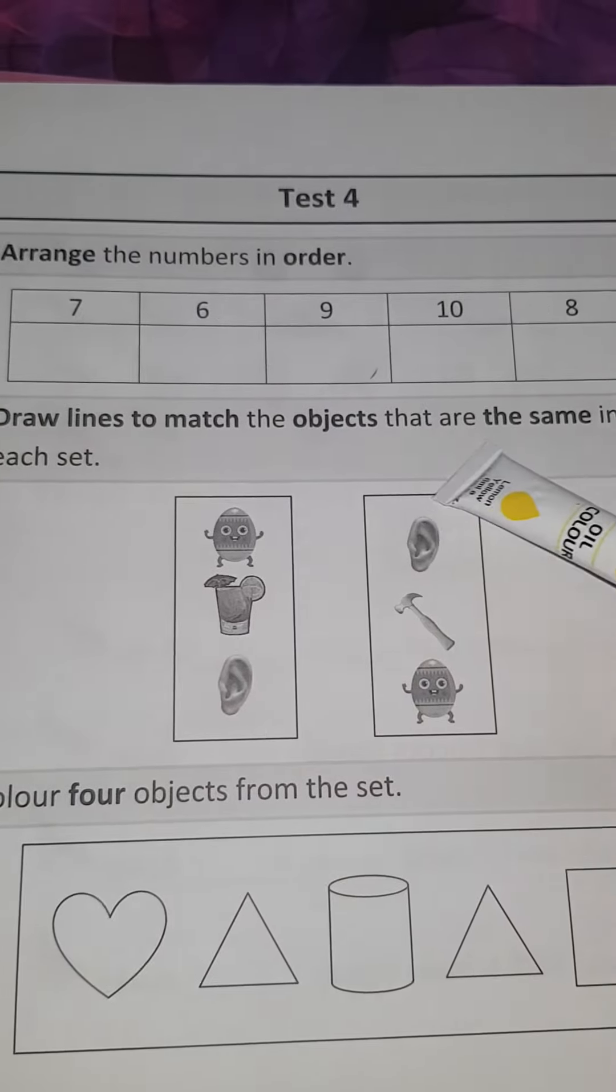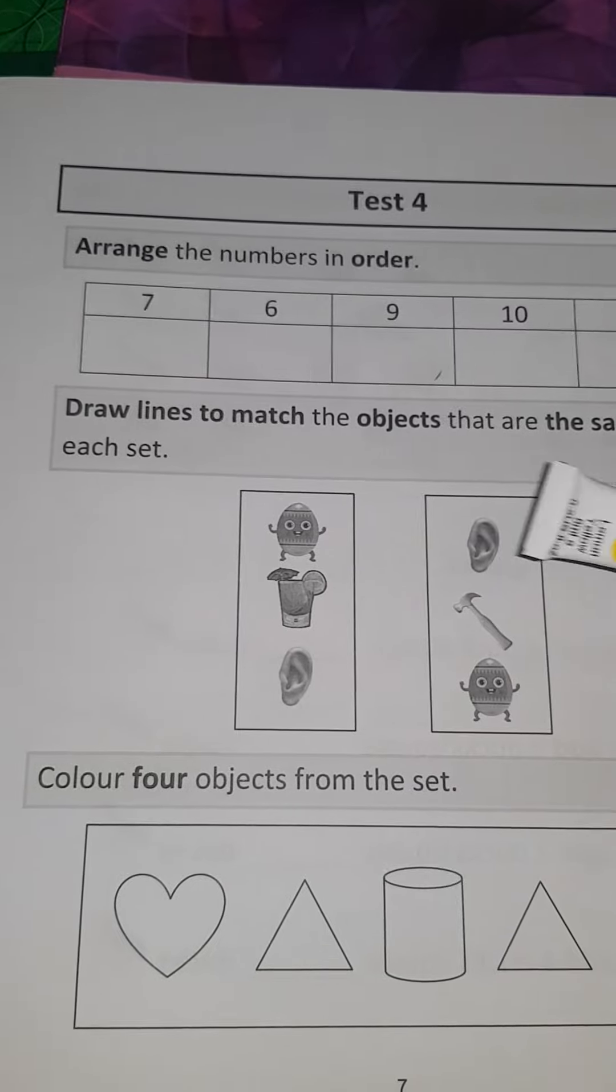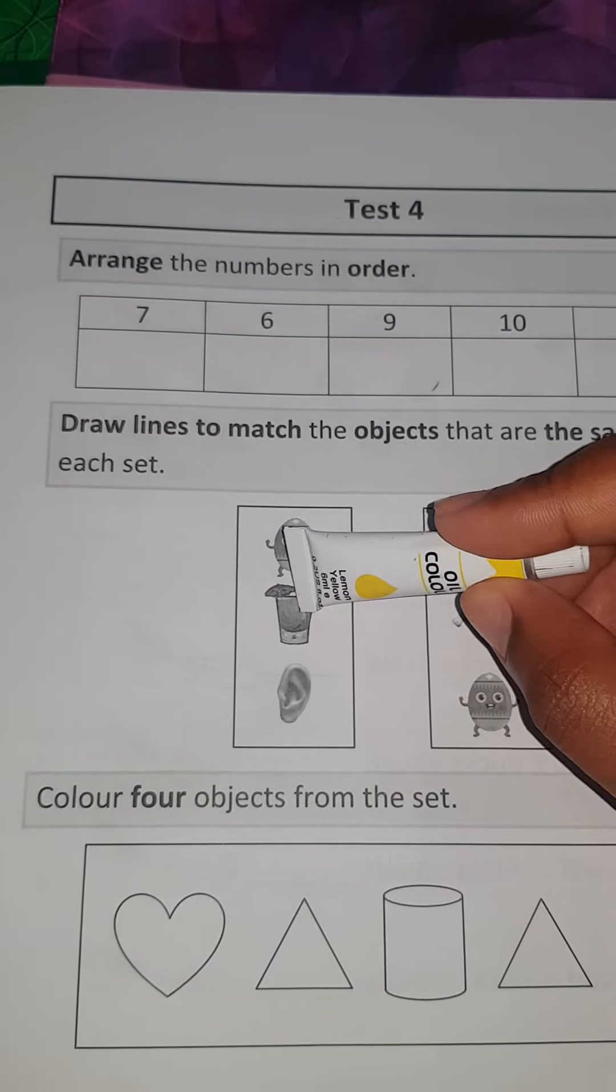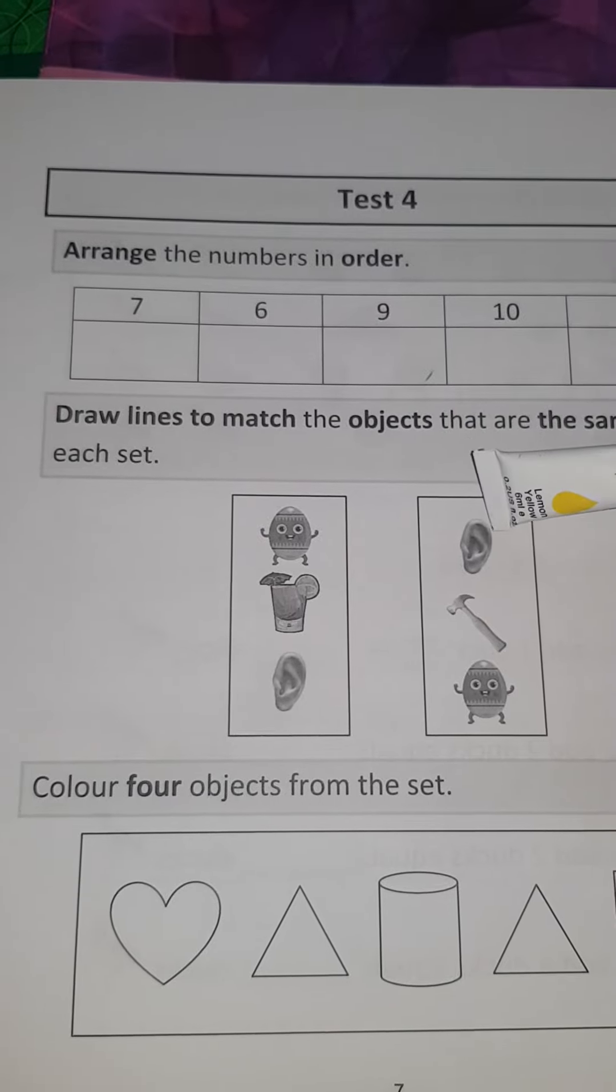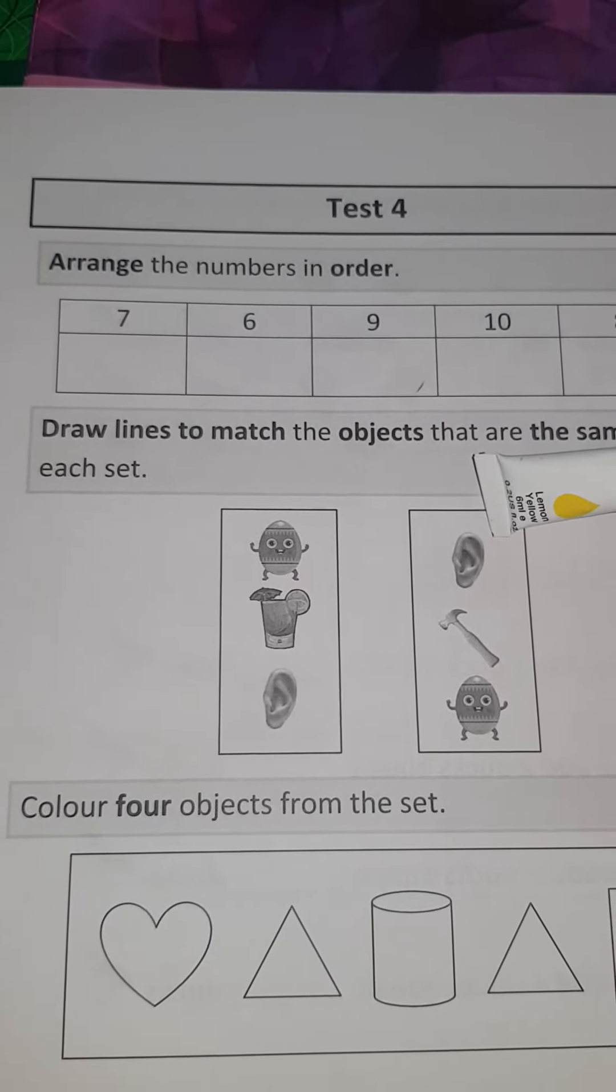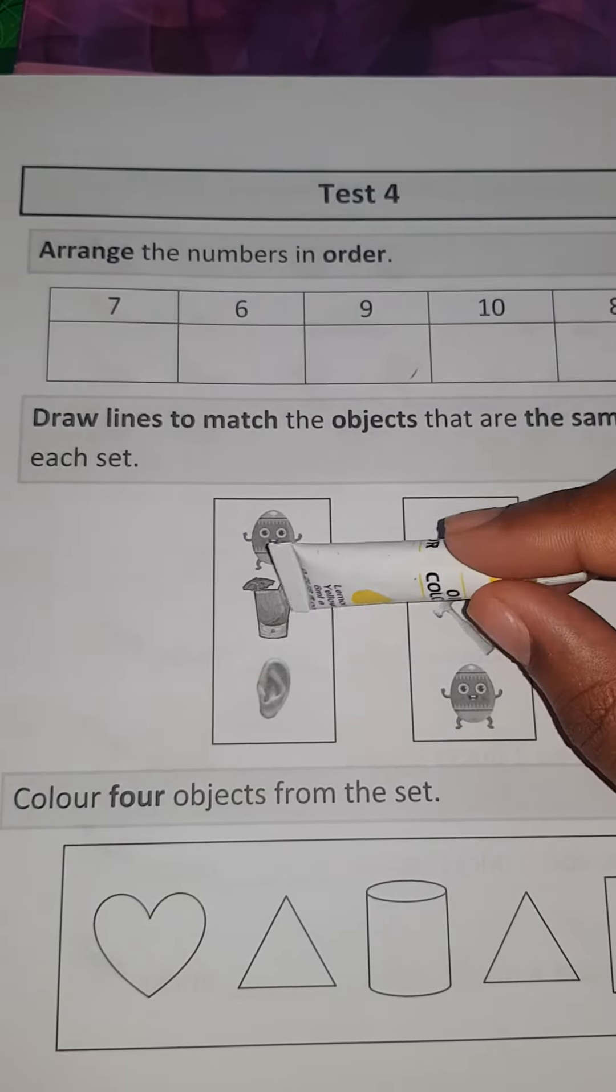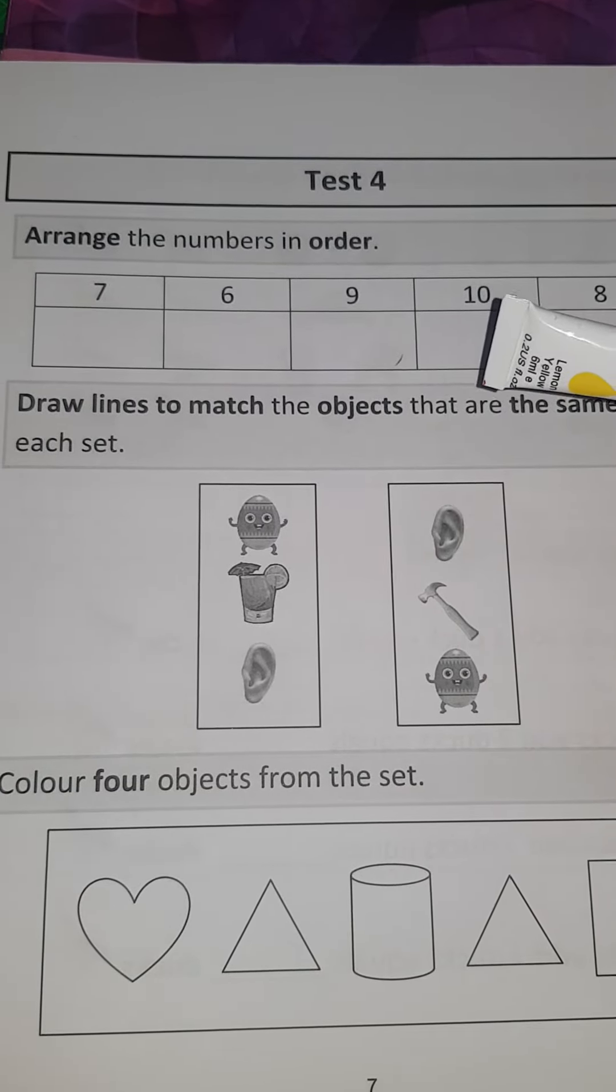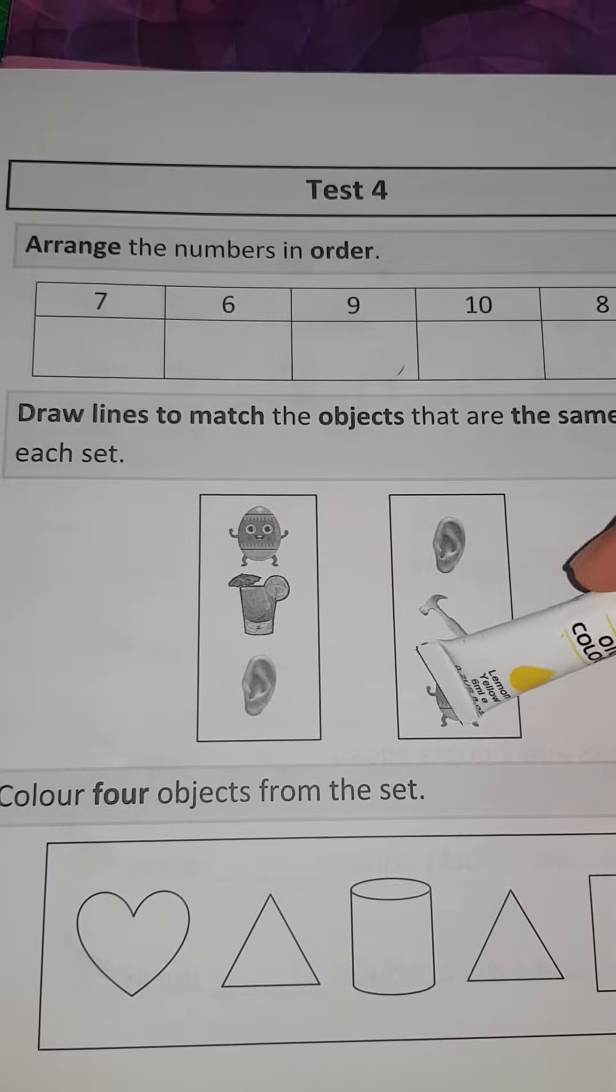Now you're going to draw lines to match the objects that are the same in each set. Is this lemonade glass the same as this ear that we're here with? No. So we don't draw a line to that. We draw a line from the lemonade glass if there was another lemonade glass over here, but there isn't one.